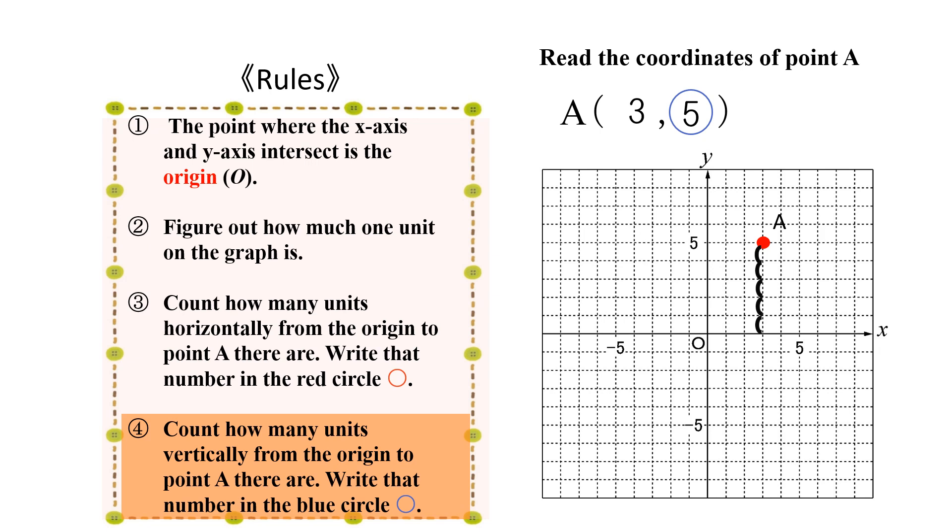In this way, we see that the coordinates of point A are three, five. That concludes our explanation of reading the coordinates off of graphs.